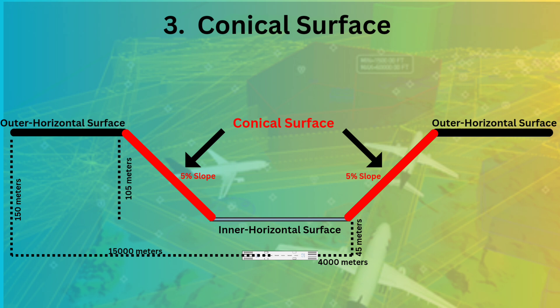Now you can see that from runway threshold till 4000 meters it's inner horizontal surface and from aerodrome reference point till 15,000 meters it's outer horizontal surface. The two surfaces are connected with each other through conical surface and the height of conical surface itself is 105 meters.